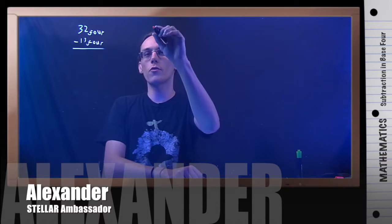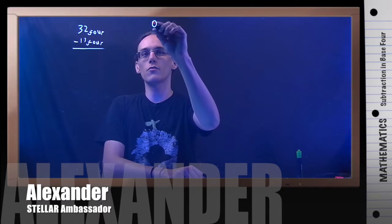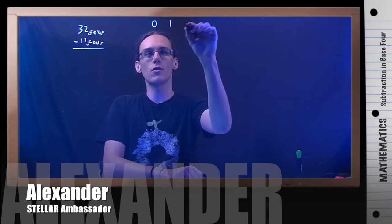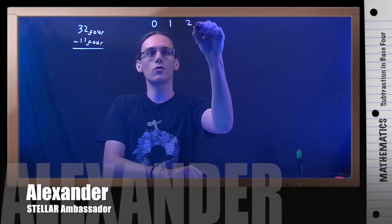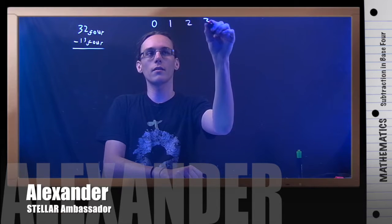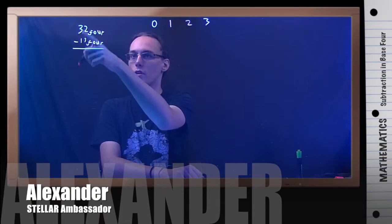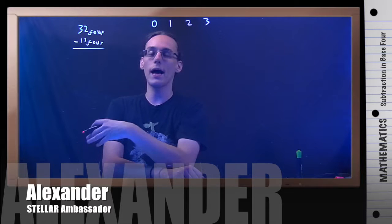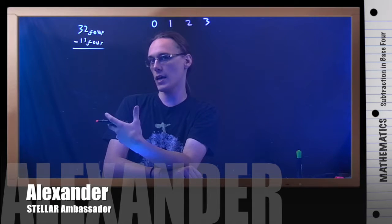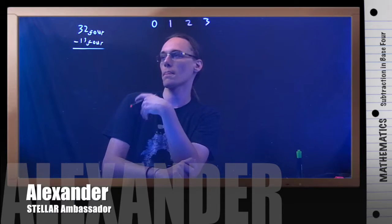Just as a quick reminder, base 4 means we only have these four symbols: 0, 1, 2, and 3. It also means that each of our positions are powers of 4 rather than powers of 10 in our normal number system.